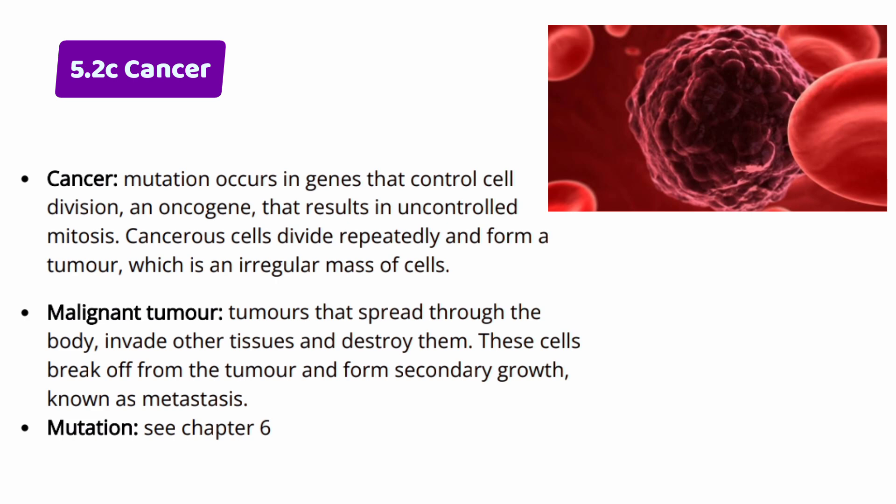Cancerous cells have the ability to divide repeatedly and form a tumor, which is an irregular mass of cells. This irregular mass, in which many cells are replicated, is what we call a malignant tumor. Malignant tumors spread through the body, invade other tissues and destroy them. Cells break off from the tumor and form secondary growths known as metastasis.